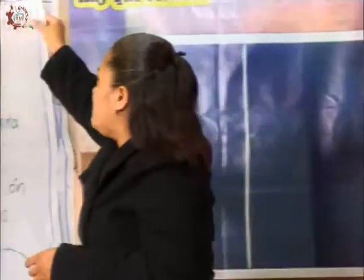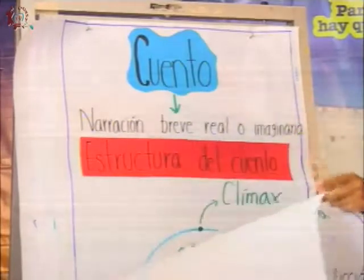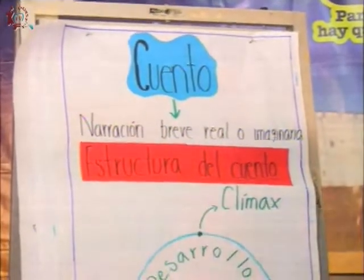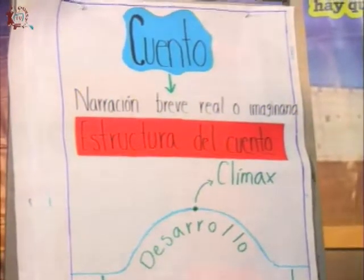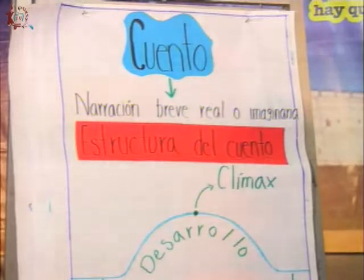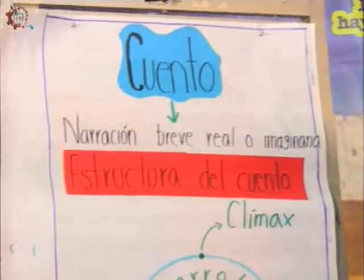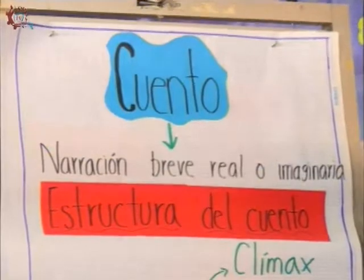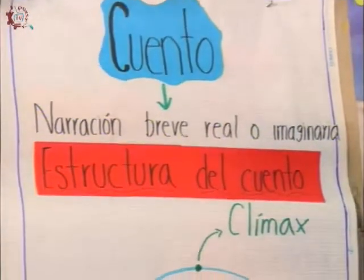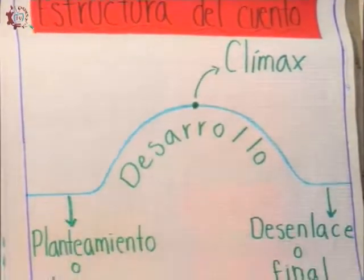Vamos a empezar con el tema. Para empezar, vamos a recordar qué es el cuento. El cuento es una narración breve, real o imaginaria, en la que se cuenta una historia en la que intervienen pocos personajes. La estructura del cuento generalmente se encuentra de la siguiente manera: inicia con un planteamiento o inicio, el desarrollo, el clímax y el desenlace o el final. El planteamiento o inicio es el momento en el que se presentan los personajes y el lugar donde se va a desarrollar la historia.